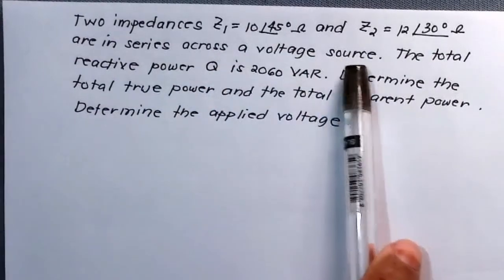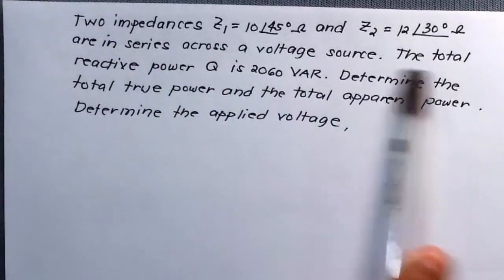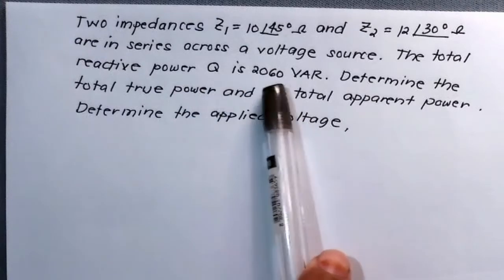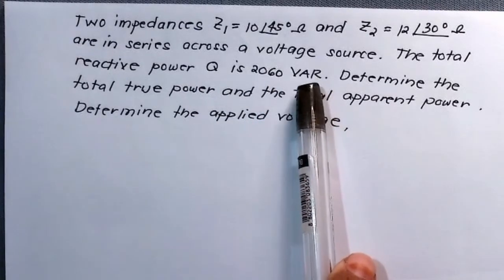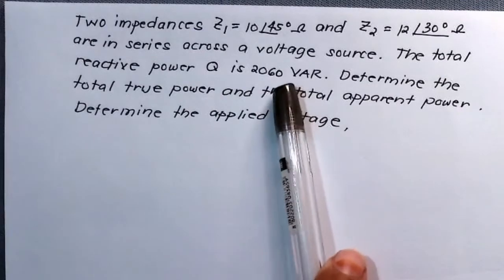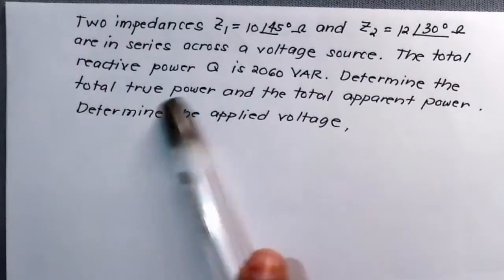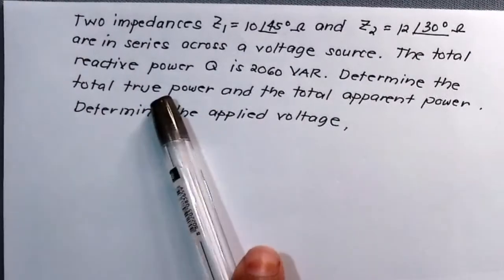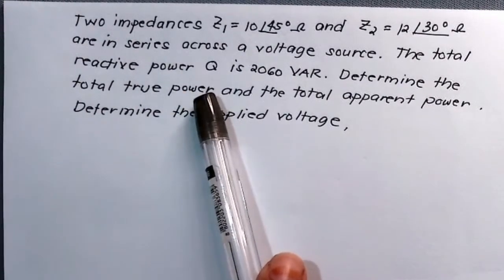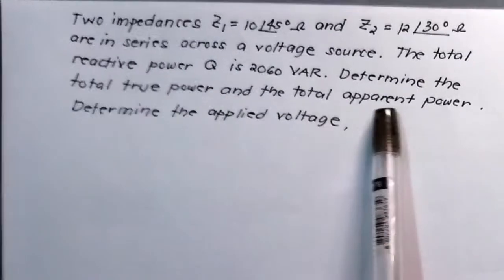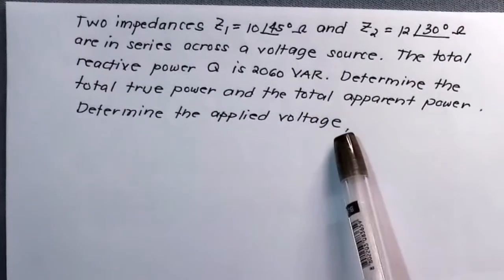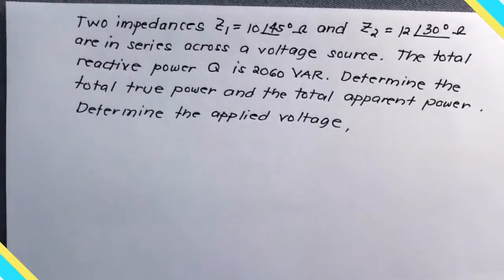These impedances are in series across a voltage source, and the total reactive power of this circuit system is given: Q = 2060 volt-ampere reactive, or 2060 VAR. We are to determine the total true power P, the apparent power S, and also the applied voltage.